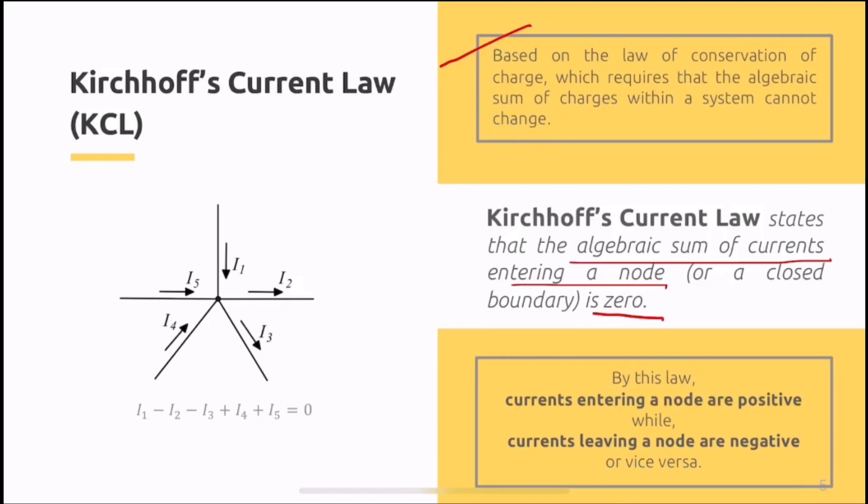That's why we said in simpler terms, if we add together all the charges entering a node, charges now in the form of current, the summation should be zero. And by this law, how does it become zero? Because the currents that enter the node are considered positive currents, and the currents that leave the node are considered negative. So whatever entered the node should equal whatever exits. So there's no loss. That's because of the law of conservation of charge.